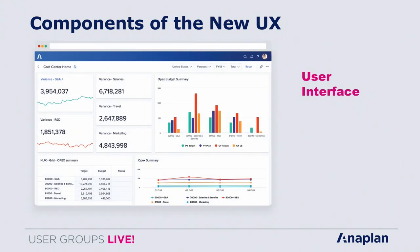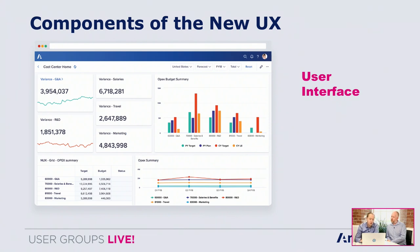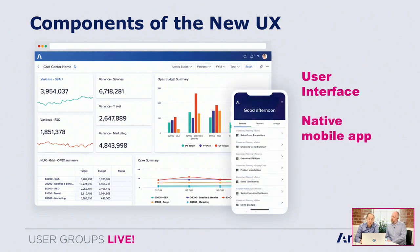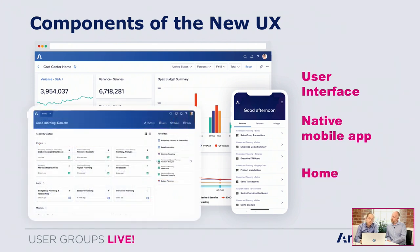As part of that we've delivered a number of components that make up the new user experience. The first is a new user interface — a lot more modern look and feel with different cards that present data pulled from the model. We've also developed a mobile app, available to download from the Google or Apple Store, and anything you build in the new UX is immediately available in the mobile app. We're also currently working on a new home page which will bring together the new user experience as well as the models within the solutions you've built today.